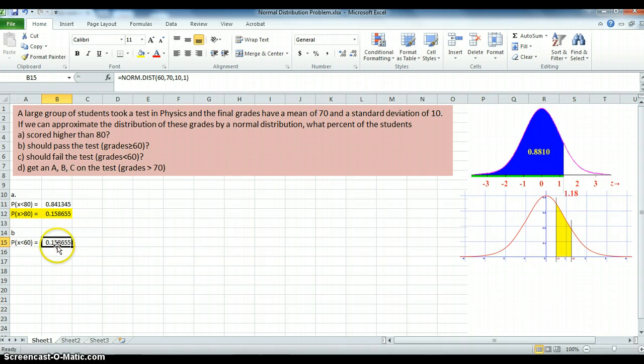So 15.8665, but now I want to take 1 minus that. So I'm saying this is a very easy problem. I really only have to really copy this number. But let's do it the right way. So instead of less than 60, I want greater than 60. And what do we get there? So here's my answer for B.